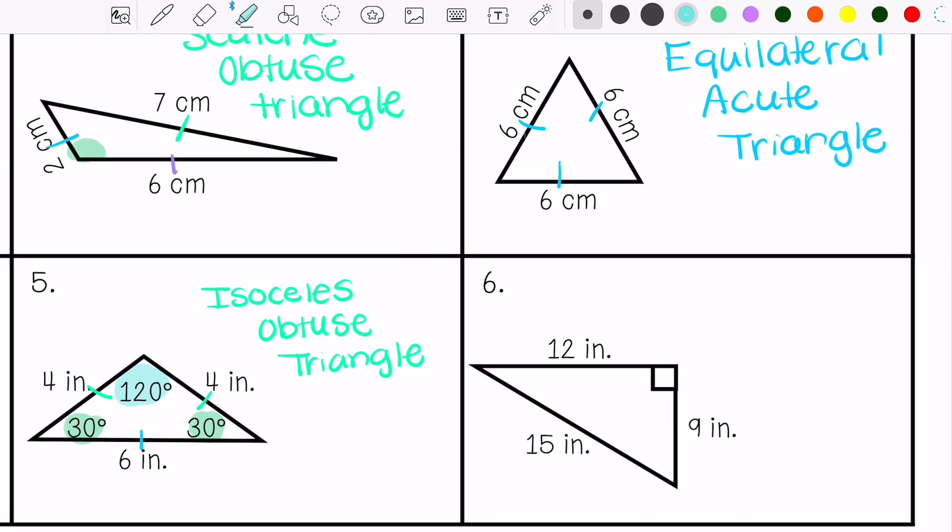And then six, I have all different sides and I have that one right angle. So I'm a scalene right triangle.